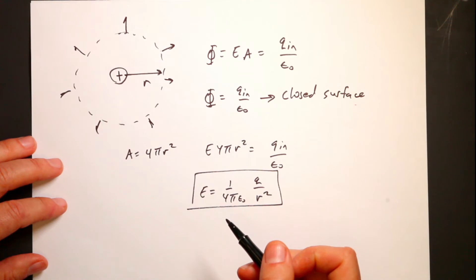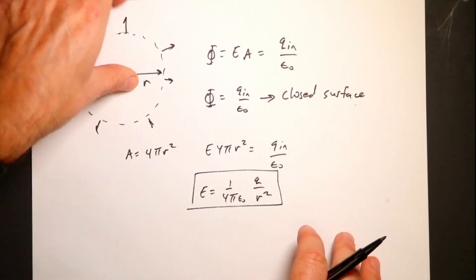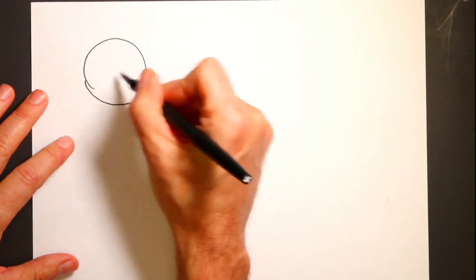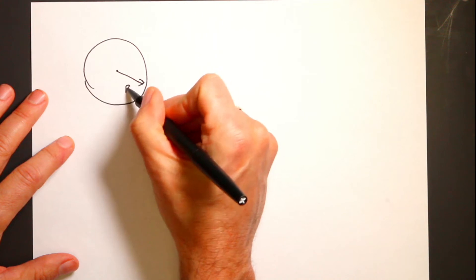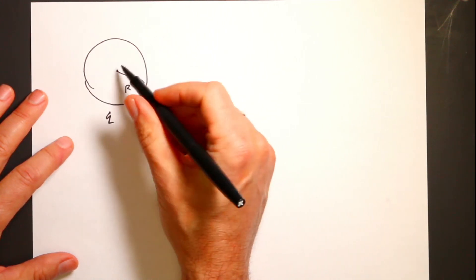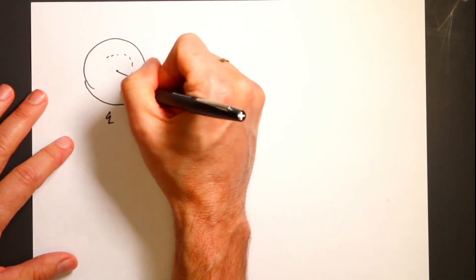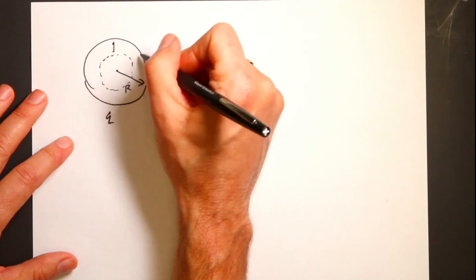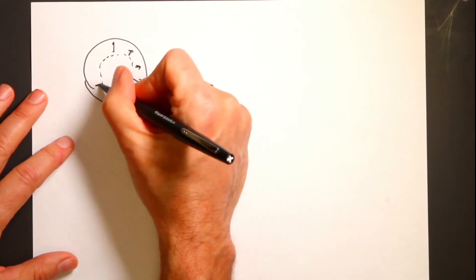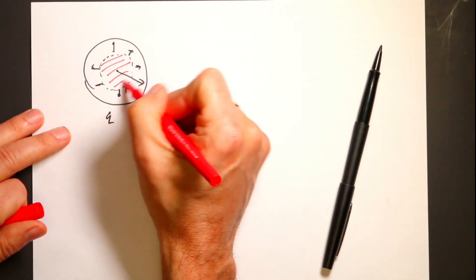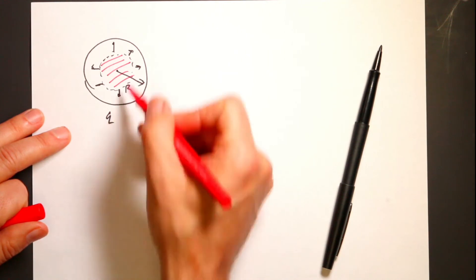Let's do the sphere problem: radius R, total charge Q, and I want to find the electric field both inside and outside the sphere. Starting inside, I draw a smaller Gaussian sphere of radius r, and I assume the field is still radially outward. Notice that the charge inside my Gaussian sphere is not the total charge Q — it's just some fraction of it.